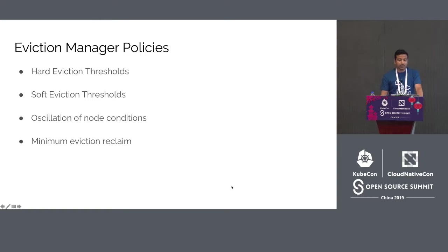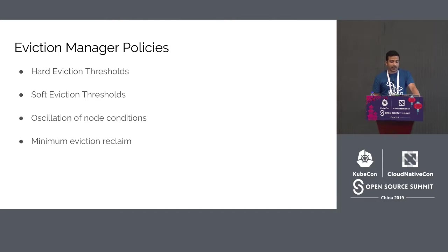Kubelet provides four key policies or types of thresholds: hard evictions, soft evictions, oscillation, and minimum reclaim. If an eviction threshold is met, Kubelet reports a node pressure condition to the master so that no new pods are scheduled on the node. We will go into the details of each of these in the subsequent slides.